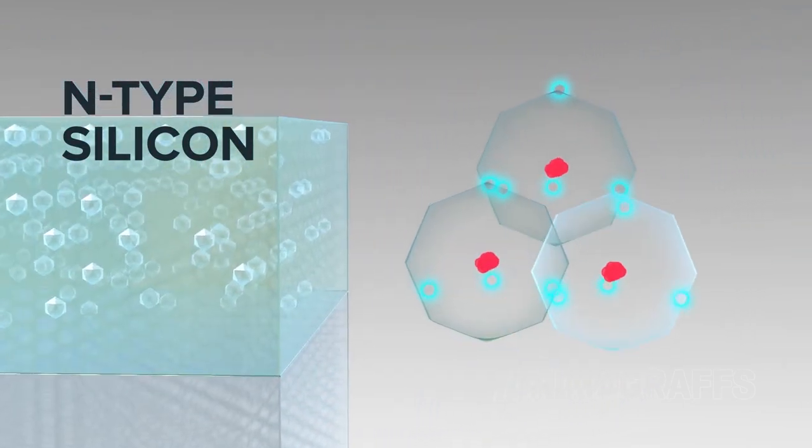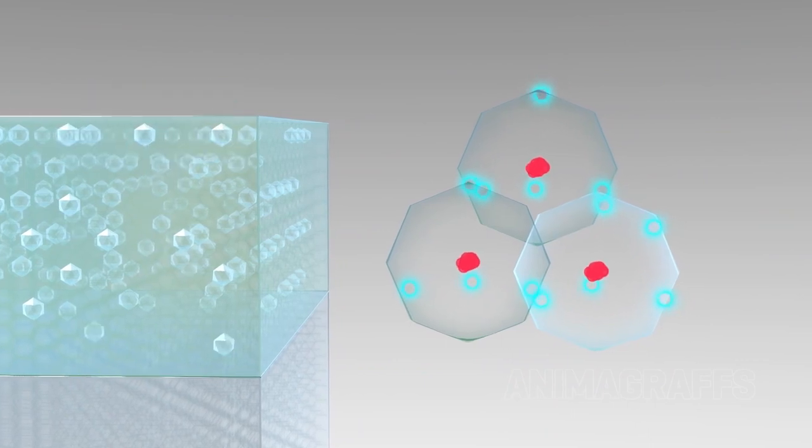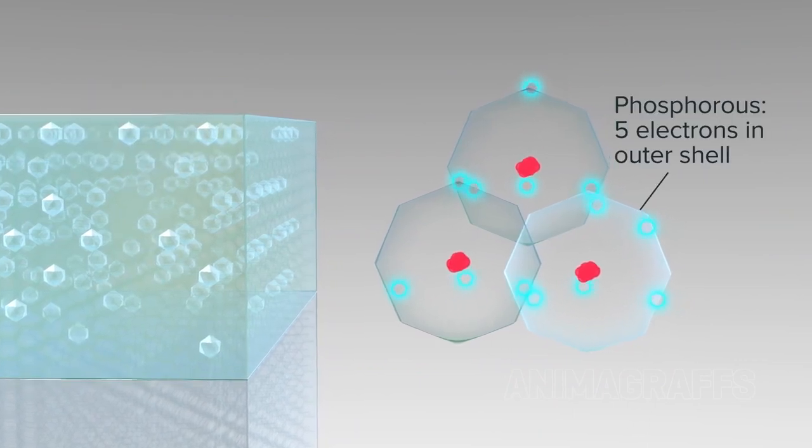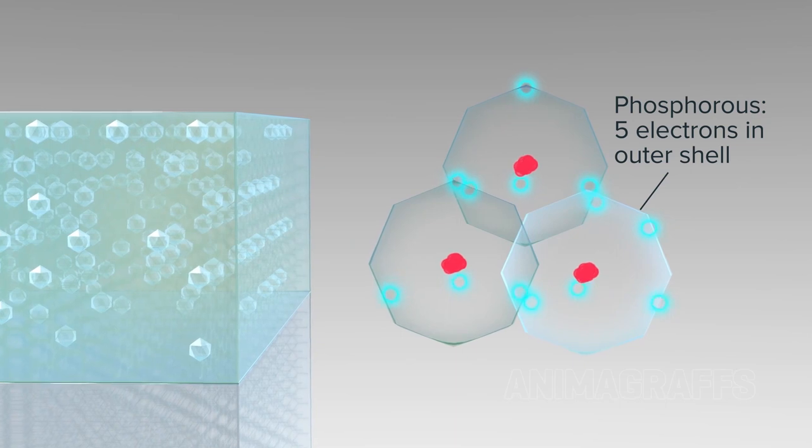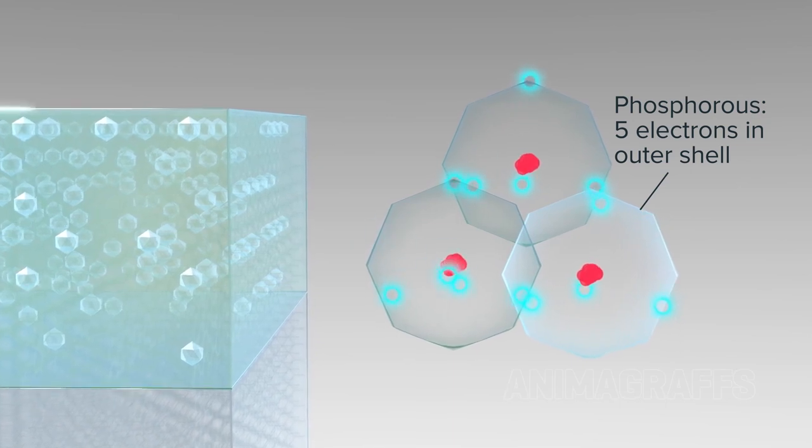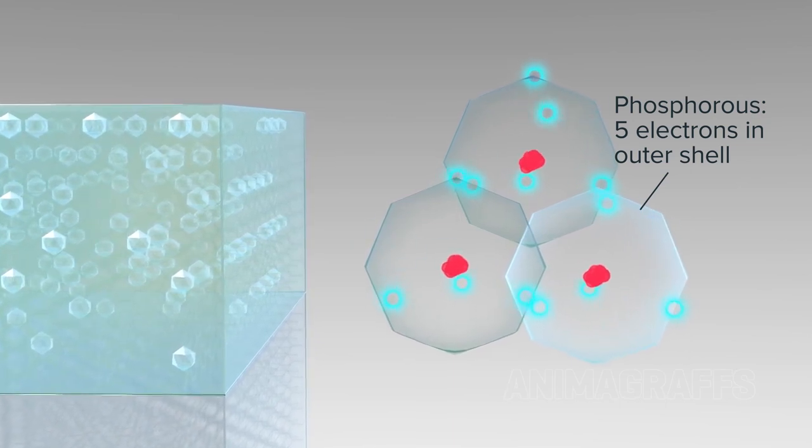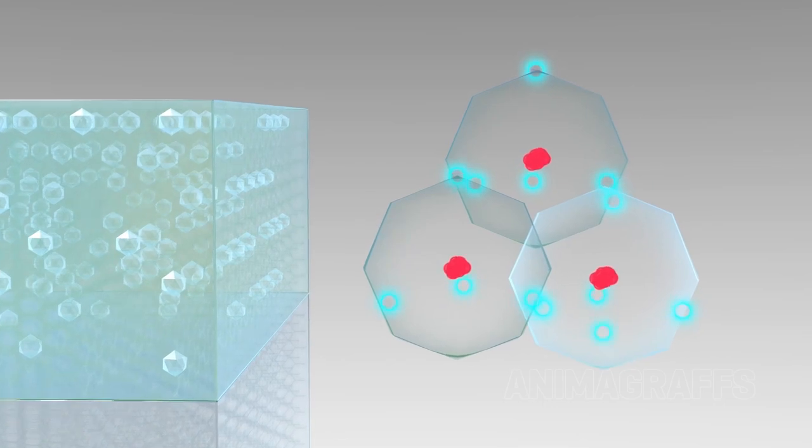N-type silicon, N meaning negative, is doped with phosphorus. Phosphorus has five electrons in its outer shell, where four are used to bond with neighboring silicon atoms, leaving an extra free electron.